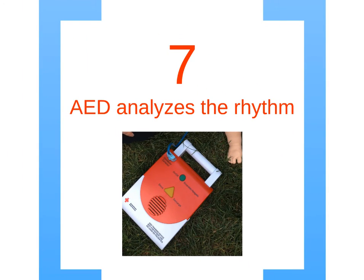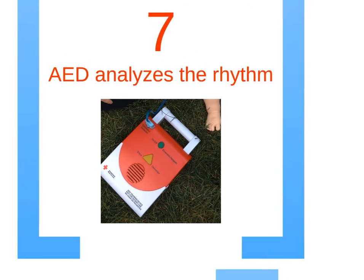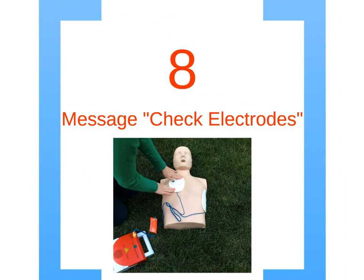Step 7: The AED will analyze the rhythm. The AED may read, 'check electrodes.' This means to ensure the electrodes are making good contact. If the victim has a hairy chest, remove the pads and reapply.